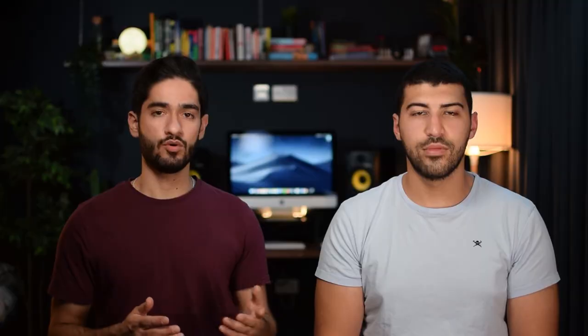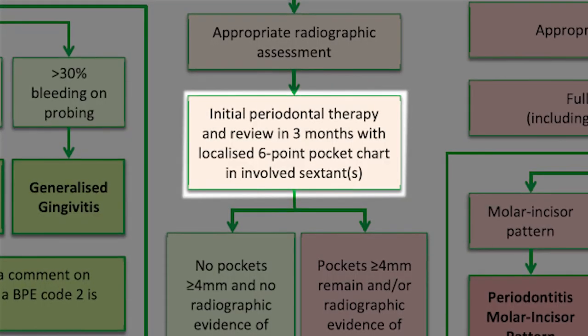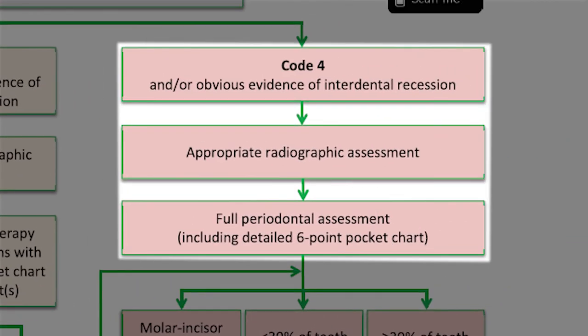That was for a BPE of three. But if the first time you saw the patient they had a BPE of four, you skip the initial periodontal therapy and the eight-to-twelve-week wait, and go straight into taking radiographs, doing a full-mouth six-point pocket chart, and forming your diagnosis.